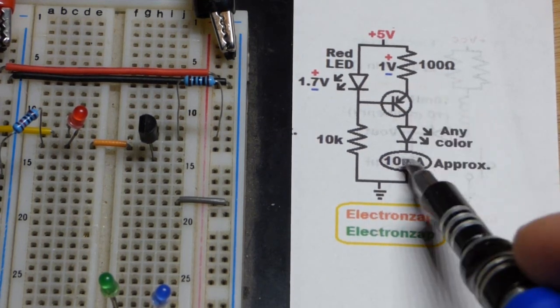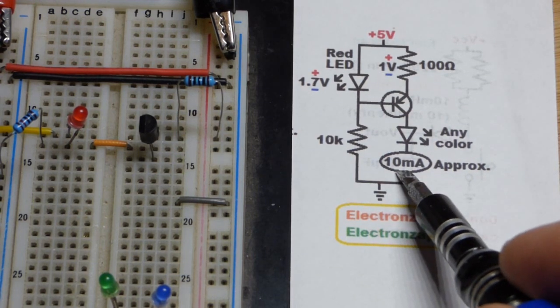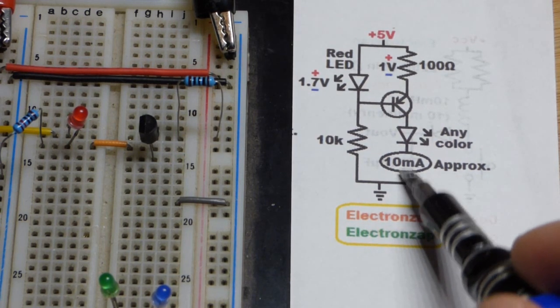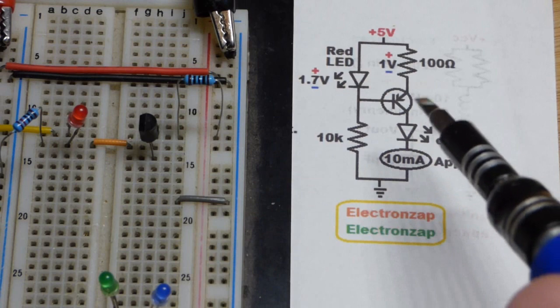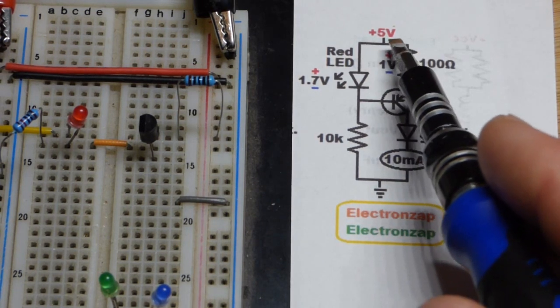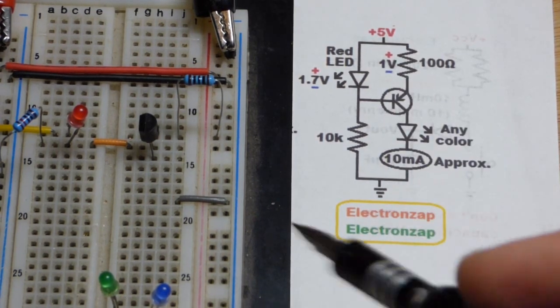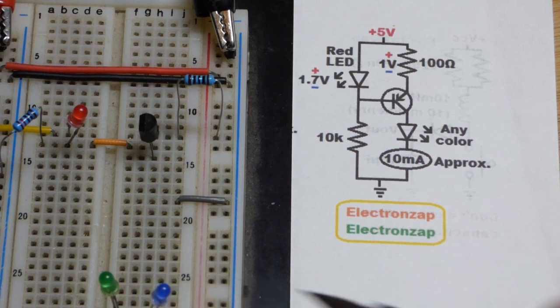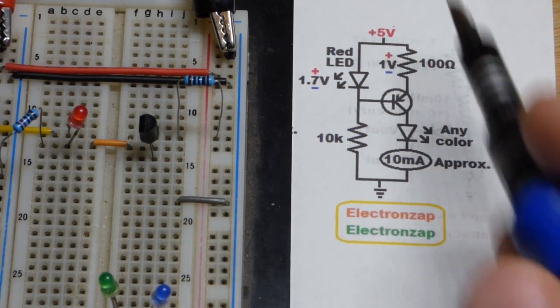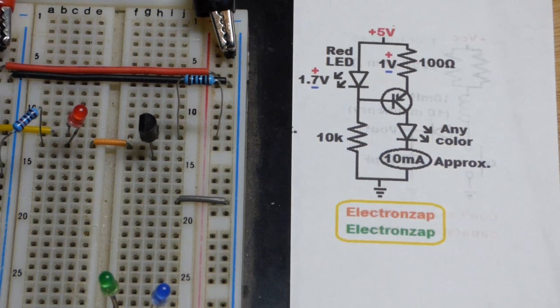So when I added that green LED, you saw it didn't even like light them. It wanted, you know, close to 8 volts. 5 volts couldn't provide that. The two LEDs by themselves wanted like 6 volts. And so we bumped up like 3 more volts, and that was able to power everything.